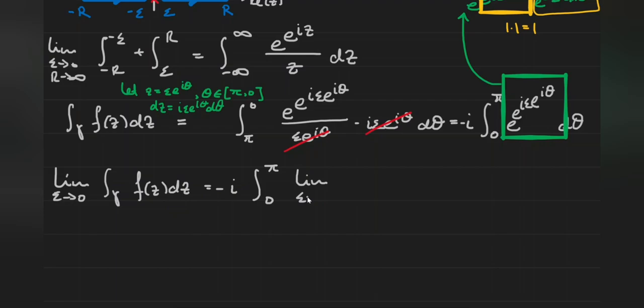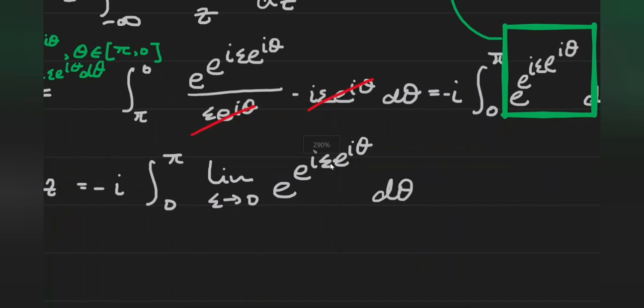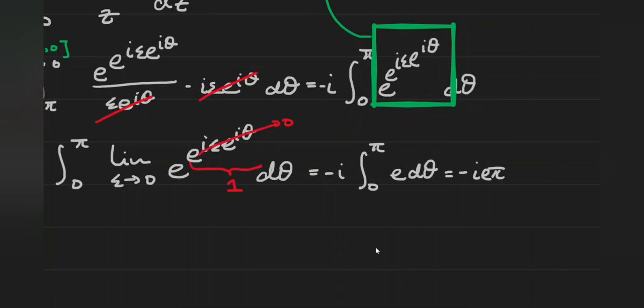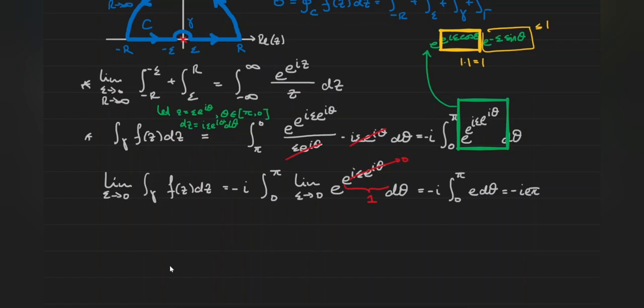Bringing the limit inside gives us negative i times the integral from zero to pi of the limit as epsilon approaches zero of e to the e to the i epsilon e to the i theta. As epsilon approaches zero, the inner exponent goes to zero, e to the zero equals one, and the whole expression becomes e to the e, which is just the constant e. So the integral over little gamma evaluates to negative i times e times pi, which is a really cool result — combining three famous constants in one expression.